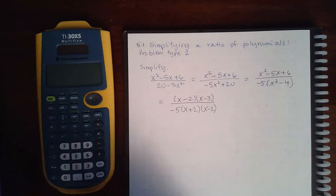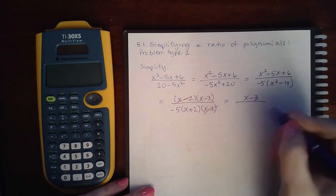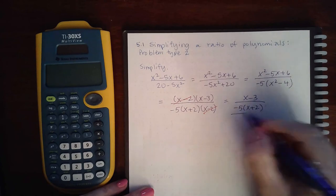And so the factors x minus 2 will reduce, leaving me with x minus 3 alone in the numerator and negative 5 times x plus 2 in the denominator.